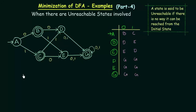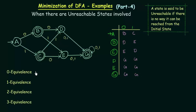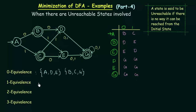The procedure for minimizing is the same as we used to do. Let us write the equivalences. Starting with the zero equivalence — we put the final states and non-final states in separate sets. The non-final states are A, D, and E, and the final states are B, C, and G. That is how we write the zero equivalence.